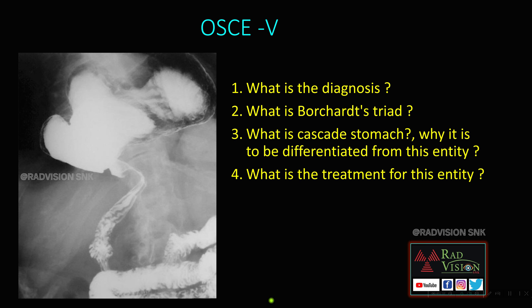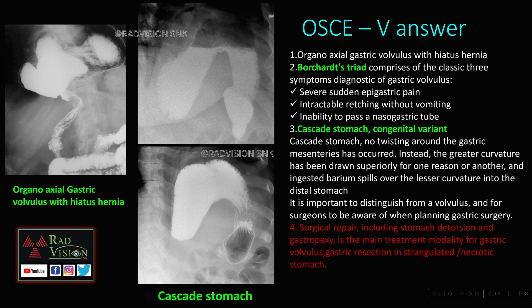OSCE 5: here you can clearly see the stomach is completely located in the thorax with abnormal orientation and there is a hiatus hernia. The diagnosis is organoaxial gastric volvulus with hiatus hernia. Borchardt's triad consists of severe sudden epigastric pain, intractable retching without vomiting, and inability to pass a nasogastric tube.